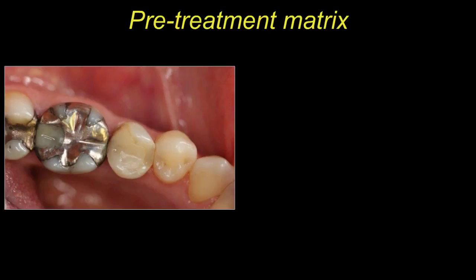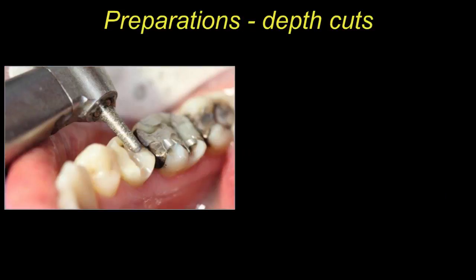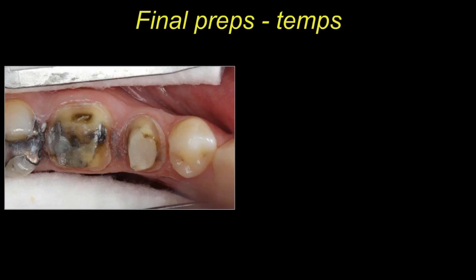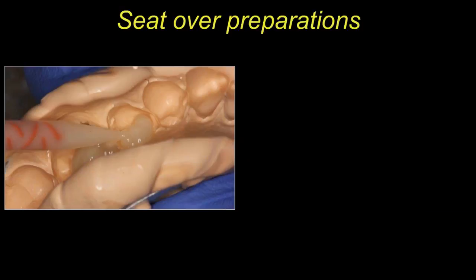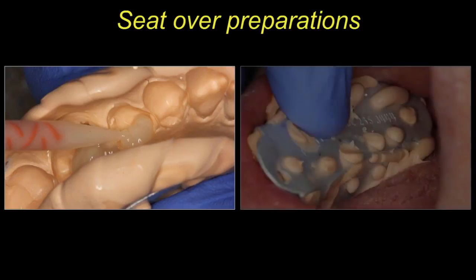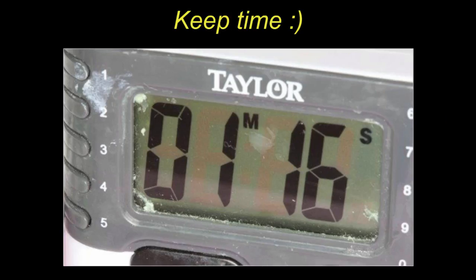Here's another case — we've got an alloy with a little fracture, so we'll patch that up before prepping. We did a pretreatment matrix in a small metal tray. I'm not going through full preparation guidelines here, but these are two crowns being prepped — I use depth cutters as well. Once prepped and cleaned, I'll mix the Perfect Temp 10, place the material inside the areas of the matrix corresponding to the prepped crowns, and seat it.